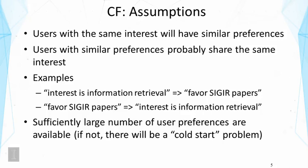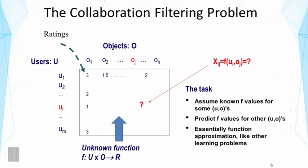Another assumption we have to make is that there are a sufficiently large number of user preferences available. For example, if you have a lot of movie ratings from users indicating their preferences, collaborative filtering can be very effective. If not, there will be a problem — that's often called the cold start problem — meaning you don't have enough preferences available for the system to fully take advantage of collaborative filtering.